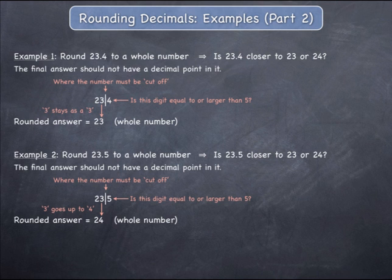All remaining digits after the line are dropped, giving the final rounded answer of 24 expressed as a whole number. This means that 23.5 is more closely approximated by 24 than it is by 23.